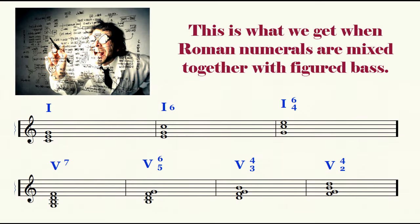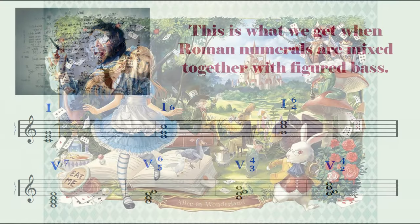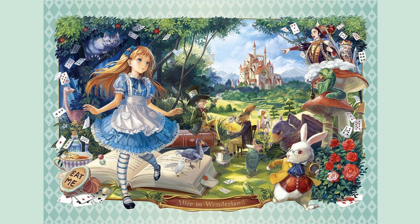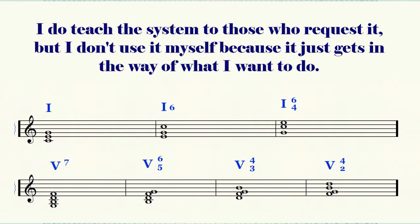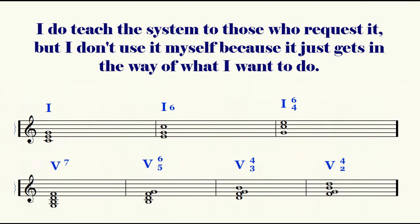But they become confusing and needlessly complicated when they are combined with figured bass. That happens when modern music schools supposedly teaching classical music mix together figured bass as used by Bach with Roman numerals that describe inversions of chords. I'm going to have to go down a rabbit hole to begin to explain the unholy mess that happens when we combine these two completely different systems together, because they don't work well together at all. I do explain this complicated system to my more advanced students, but only to prepare them for what I think they may run into in theory classes that I think are very, very poor.